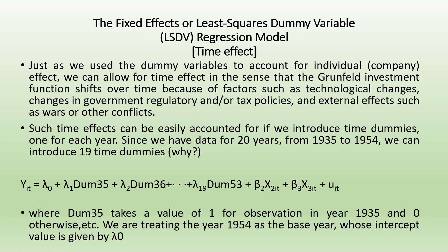Just as we use dummy variables to account for individual effect, we can allow for time effects — meaning the investment function shifts over time because of factors such as technological changes, changes in government regulatory and tax policies, and external effects such as wars. Such time effects can be accounted for by introducing time dummies, one for each year. We have 20 years in our data set from 1935 to 1954, so we will have to create 19 dummies. We treat the year 1954 as the base year whose intercept value is given by lambda_0.